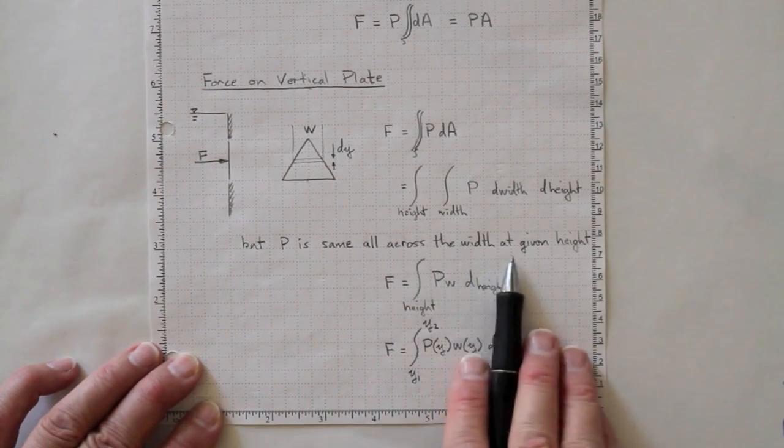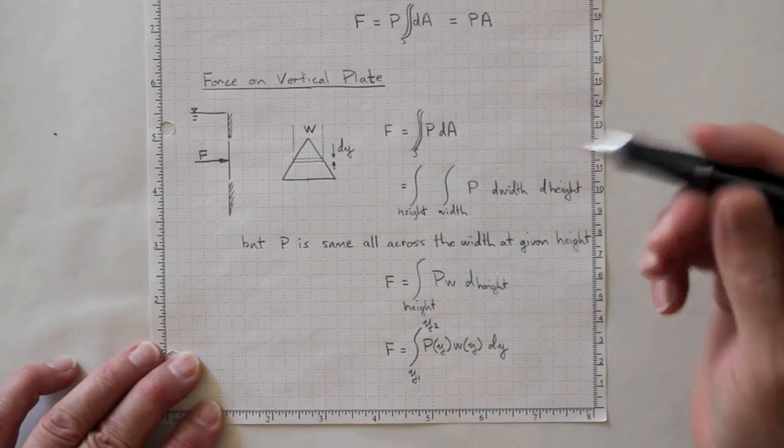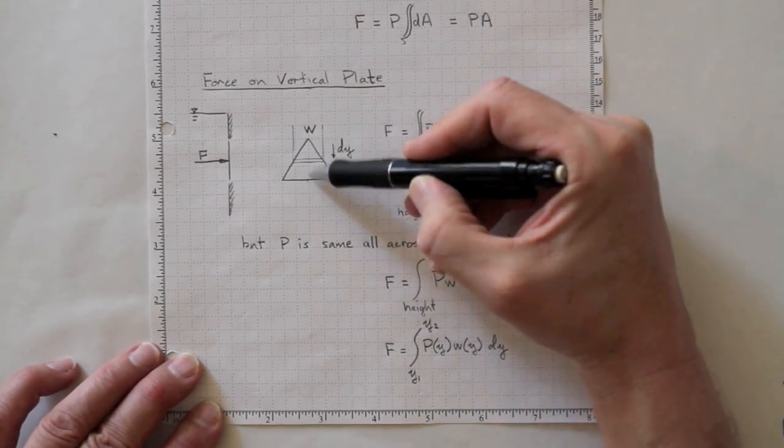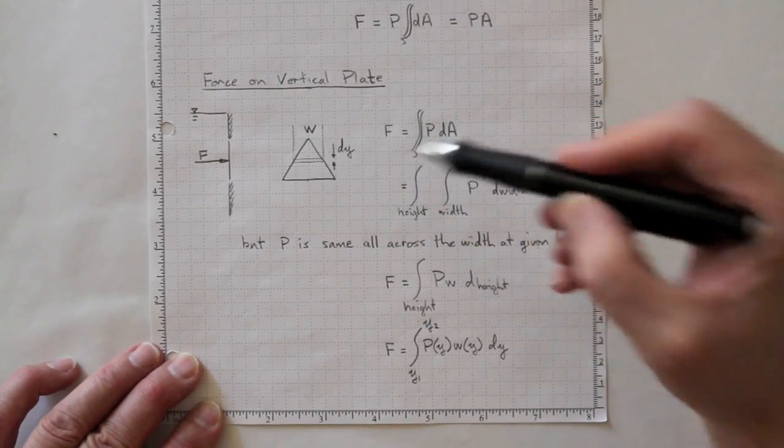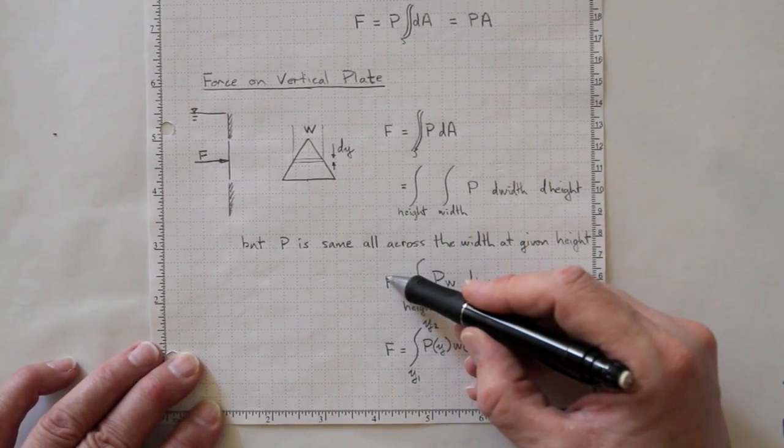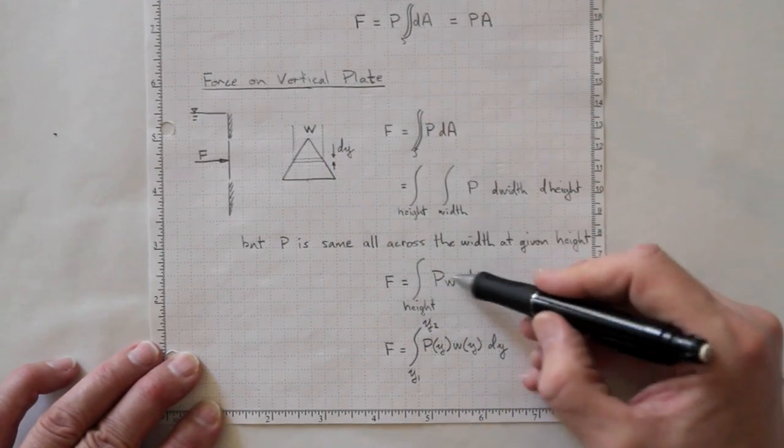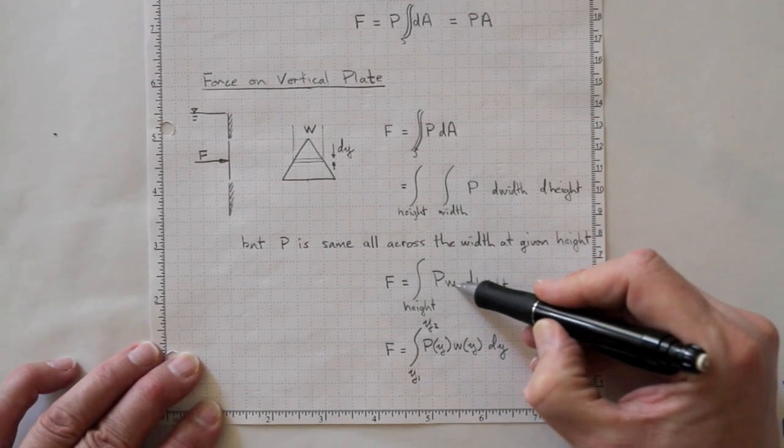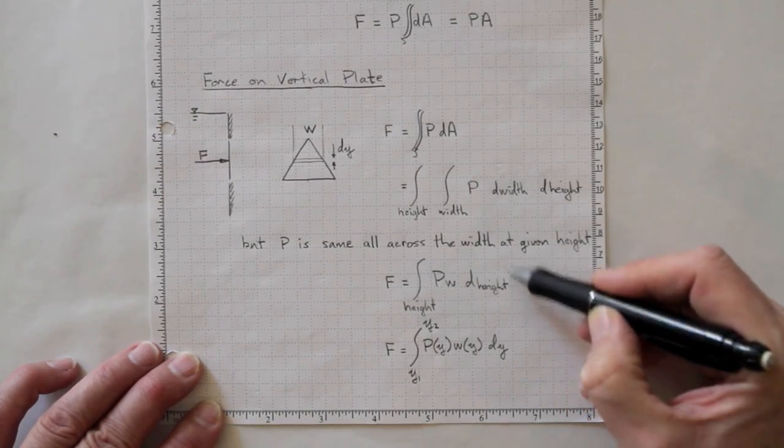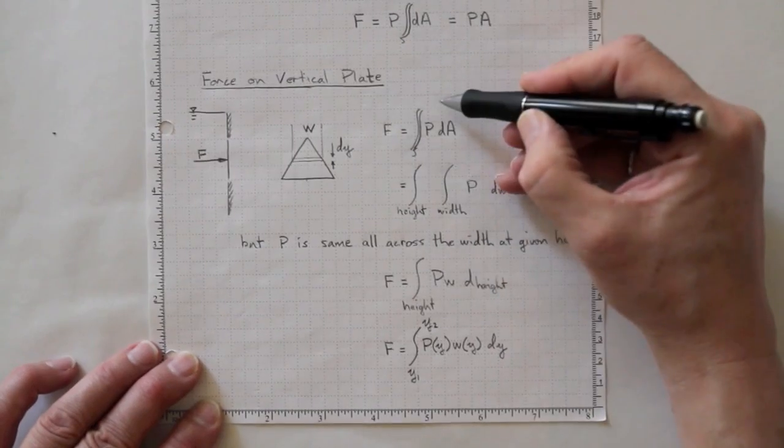But the pressure is the same all across the width at a given height, if we've been careful enough to orient our axes such that one is vertical and one is horizontal. Thus, we wind up with the force equal to the integral just over the height of the pressure times the width times d height, the change in height, or more reasonably with the y direction in this direction,